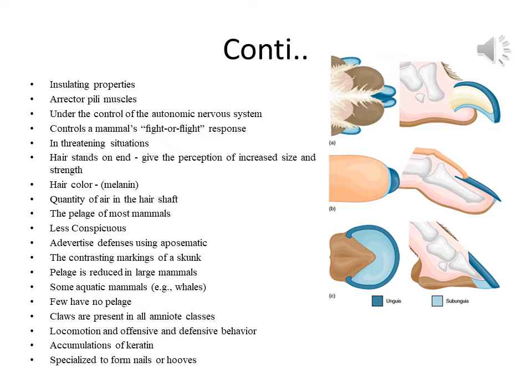Some mammals advertise their defenses using aposematic coloration, also known as warning coloration. The contrasting markings of a skunk are a familiar example.